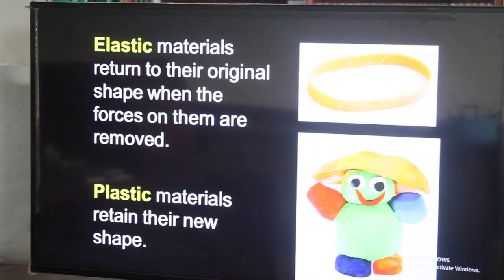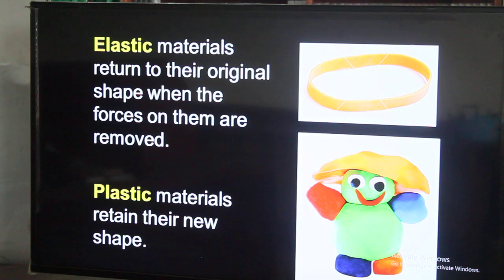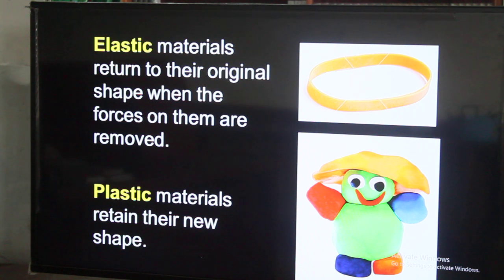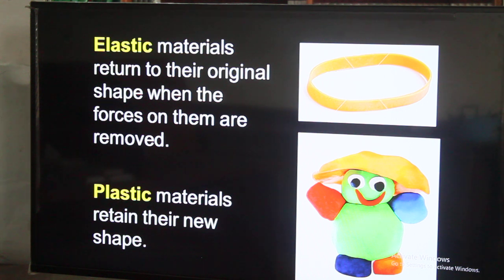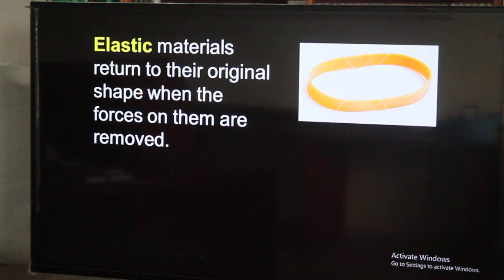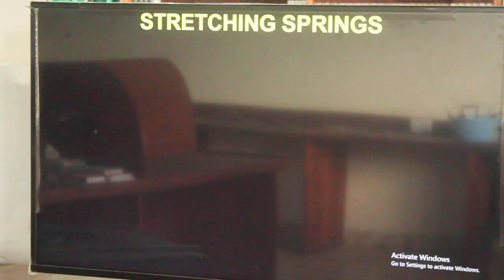But plastic materials are such that when they are stretched, they will change shape and will not go back to the original shape — they will retain their new shapes. So in terms of properties of materials, they can be called brittle, resilient, elastic, plastic, and so forth. We can also call them hard.